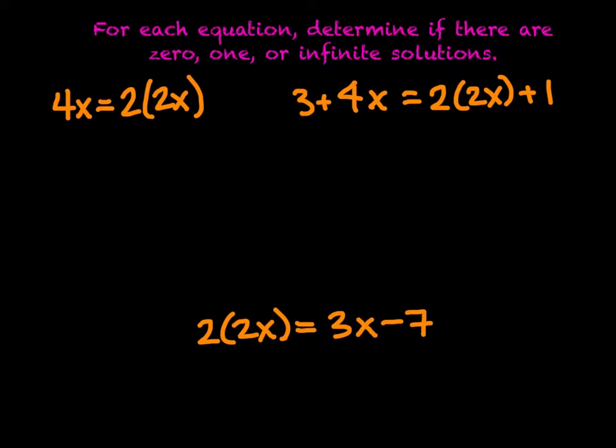We have 4x is equal to 2 times 2x. I see a parenthesis here, so let's take care of that first. We need to get rid of those parentheses. So 2 times 2x would get us 4x. So we have simply 4x on the left-hand side is equal to 4x on the right-hand side.